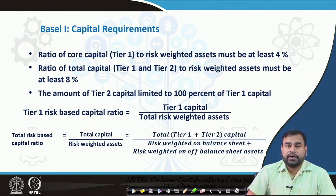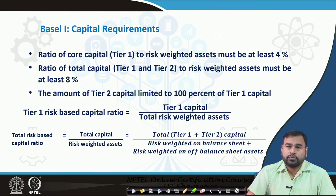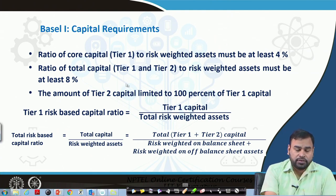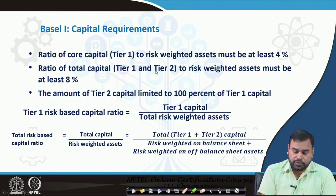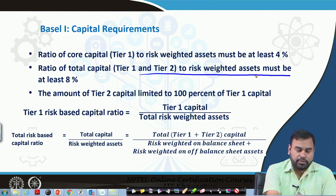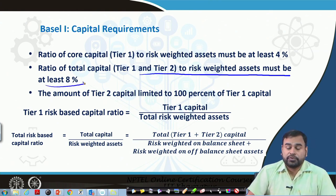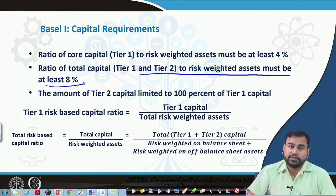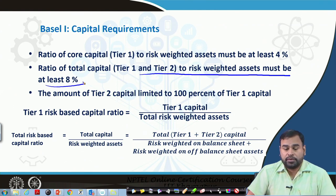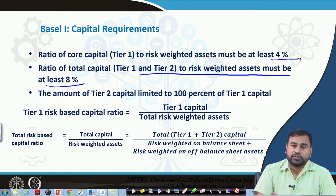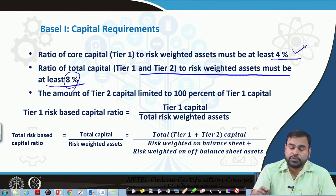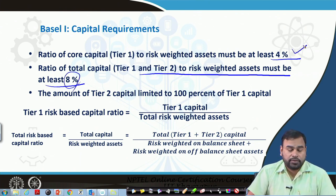According to Basel 1, total capital divided by risk-weighted assets must be at least 8 percent. They also said that out of this total, 50 percent of capital should be equity — meaning tier 1 capital divided by risk-weighted assets should be at least 4 percent. If the complete ratio is 8 percent, then 4 percent should be tier 1 capital.